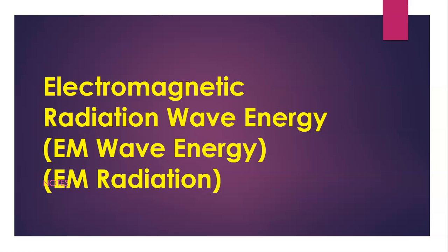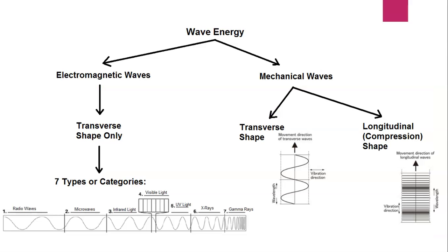Okay, so let's get started. Electromagnetic radiation wave energy — it's also known as EM wave energy, it's also called just plain old radiation. This should look familiar to you. When we first started wave energy, I told you that we would learn two different types of wave energy. Mechanical waves, which we did already.